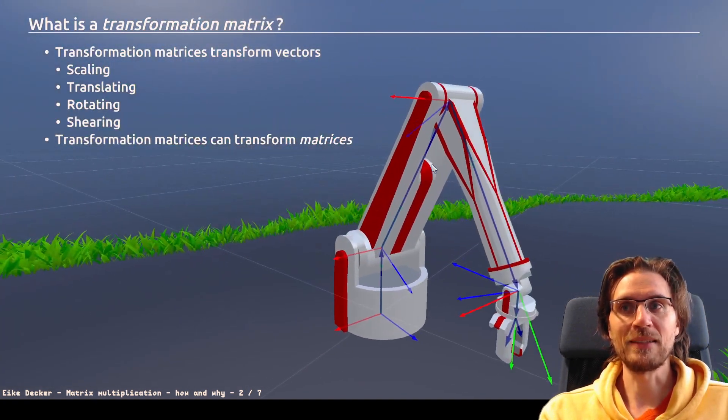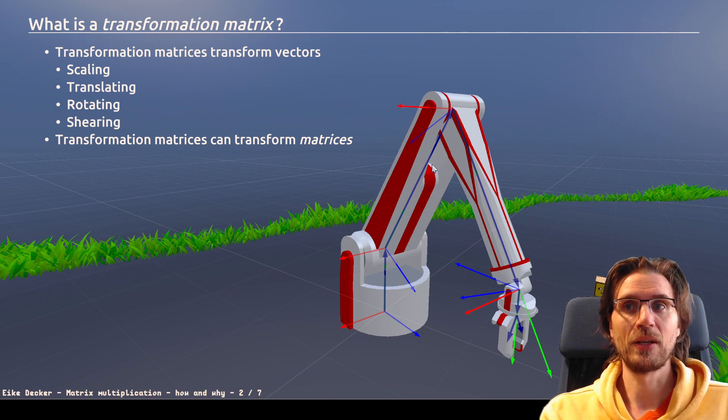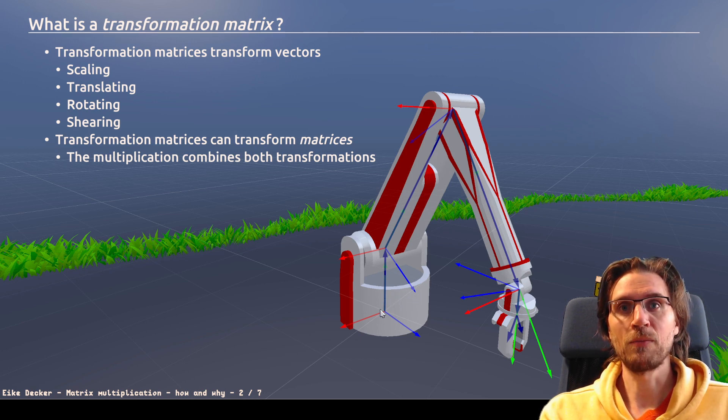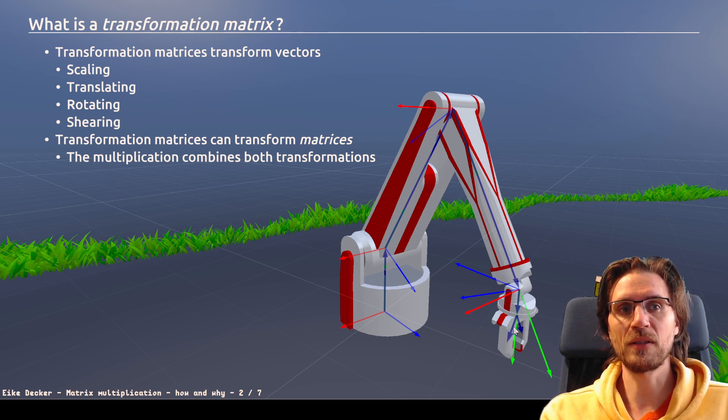Now, another thing that a transformation matrix can do is to transform other matrices, where we combine multiple transformation matrices by multiplying them. Like the base is transforming the upper arm matrix, the lower arm matrix, the wrist matrix, and so on. All these are matrices which are drawn here. And by multiplying them, we combine them.